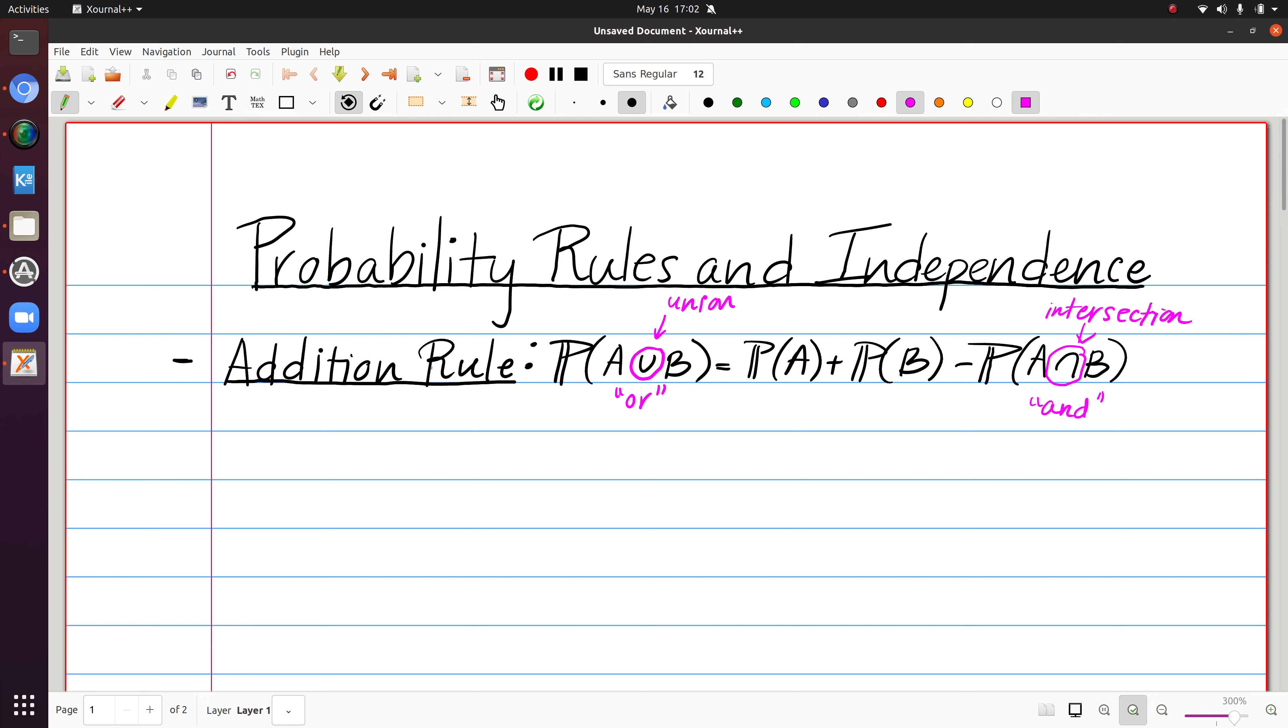And just to be clear, when we talk about the probability of A or B, that's accounting for the possibility that only A occurs, or only B occurs, or that they both occur. And the probability of A and B means that both A and B must occur.